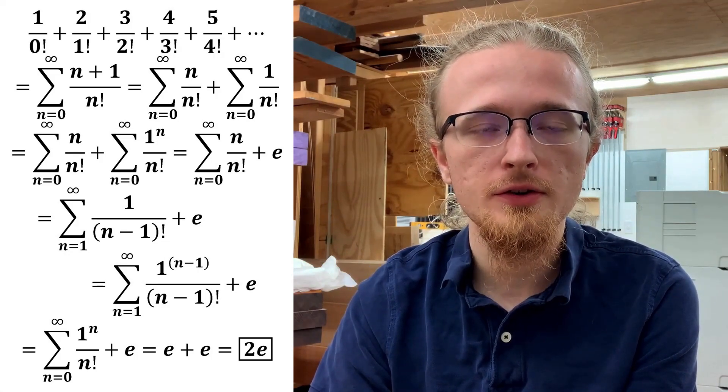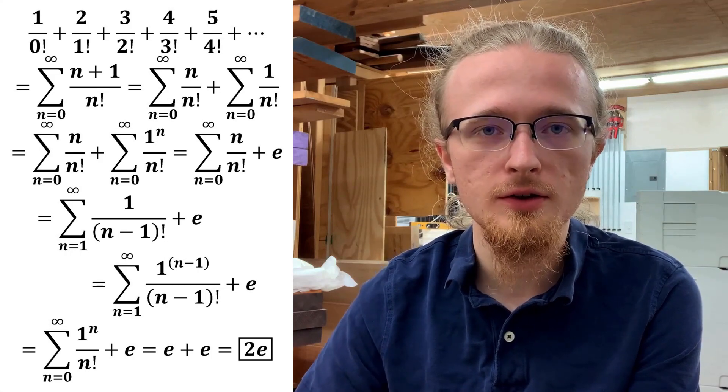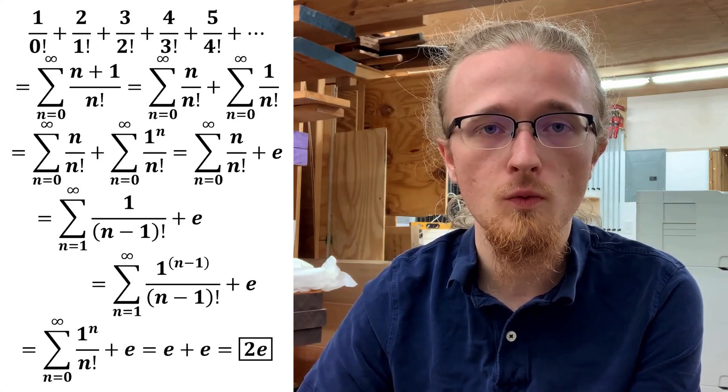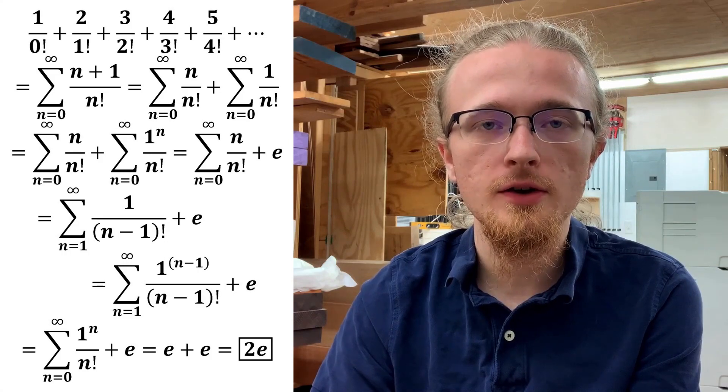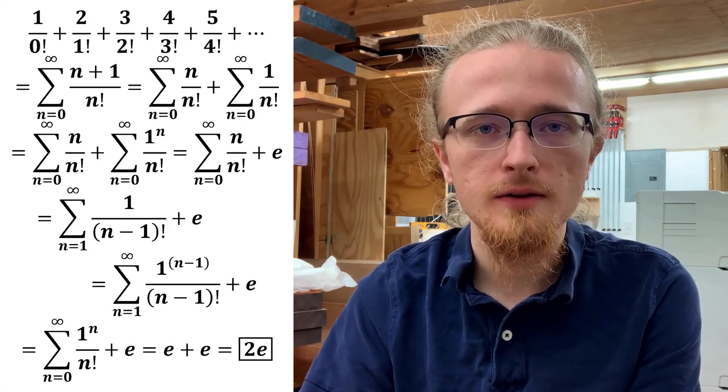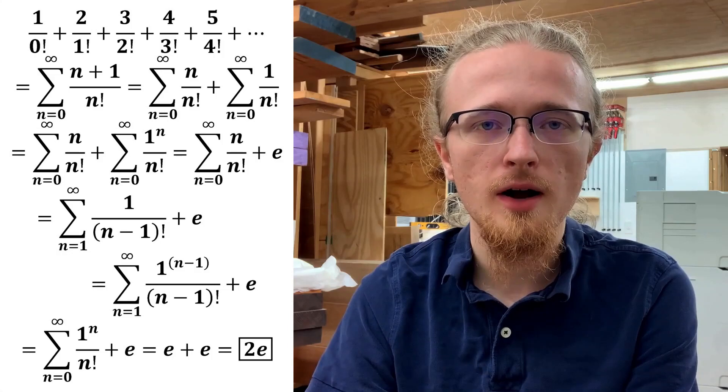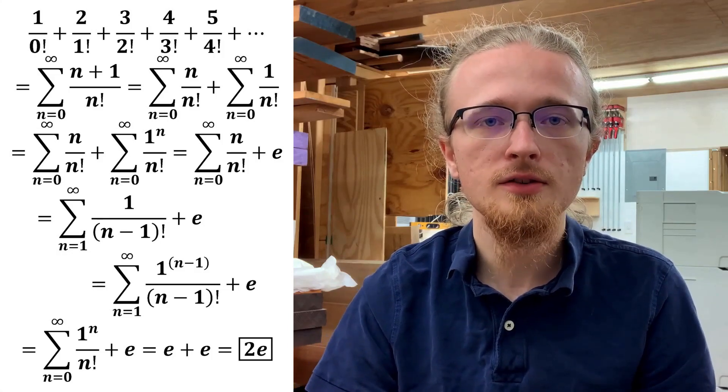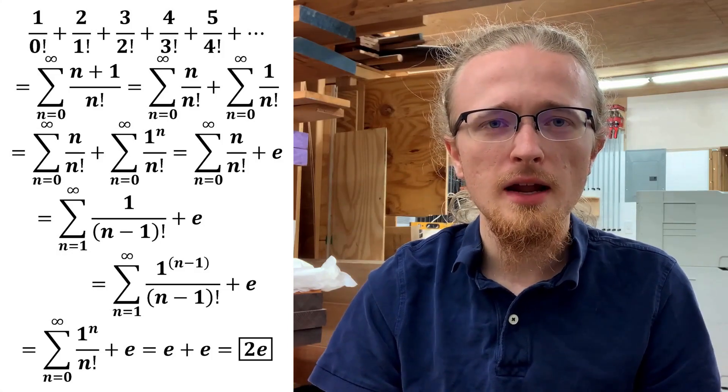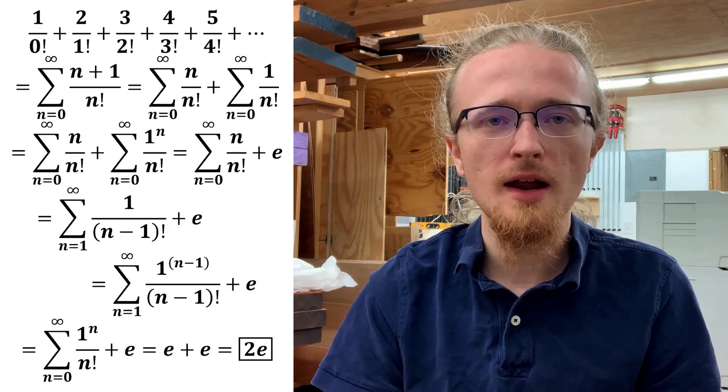If you took the original sum we started with and replaced all the integers in the numerators with 1, you would simply get a series that straightforwardly equals e. But if instead of 1s you have those ascending positive integers that characterize the series we just completed, it has the effect of multiplying the answer by 2.